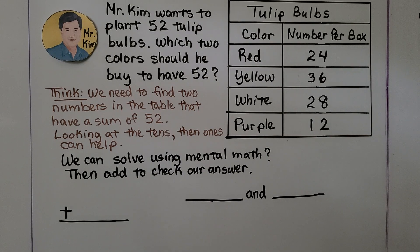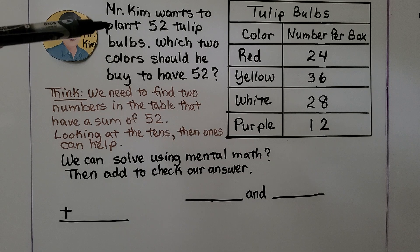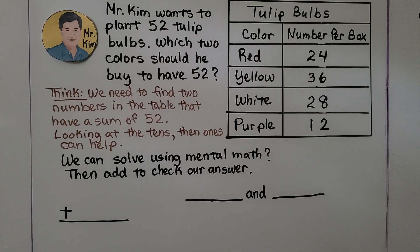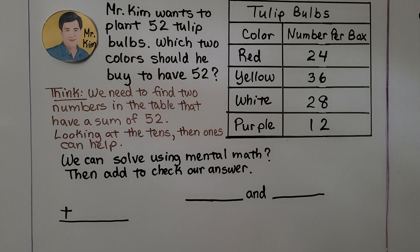Mr. Kim wants to plant 52 tulip bulbs. Which two colors should he buy to have 52? We think we need to find two numbers in the table that have a sum of 52. Looking at the tens, then ones can help.